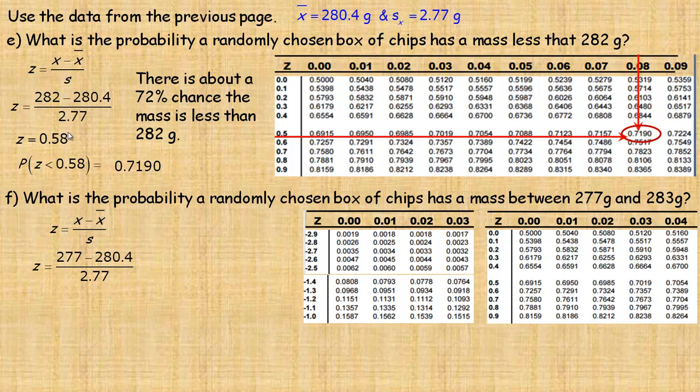So 277 minus the 280.4 divided by 2.77, same mean and standard deviation as we used up in E. So for the 277, it works out to a z-score of -1.23. So it's -1.23 standard deviations below the mean. We also need to find the z-score for 283. So we do 283 as well, and it works out to 0.94.